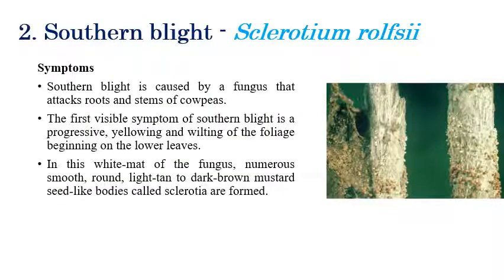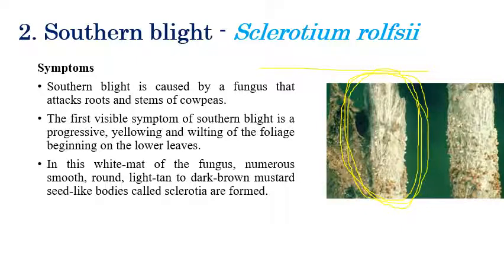Coming to the second disease, southern blight, which is caused by Sclerotium rolfsii. We can see white color cottony mycelial growth on the stem region as well as in the root region. These are the most visible symptoms. Along with the mycelial growth, black mustard-shaped sclerotia are produced on the stem. The stem is covered with white color cottony mycelial growth as well as mustard-shaped sclerotia produced on the stem itself.